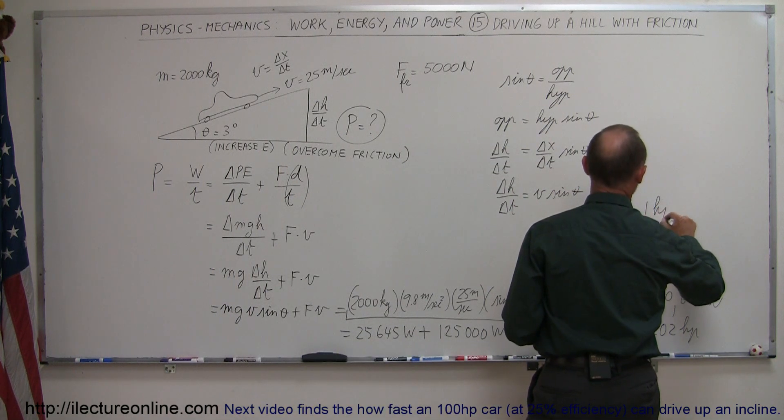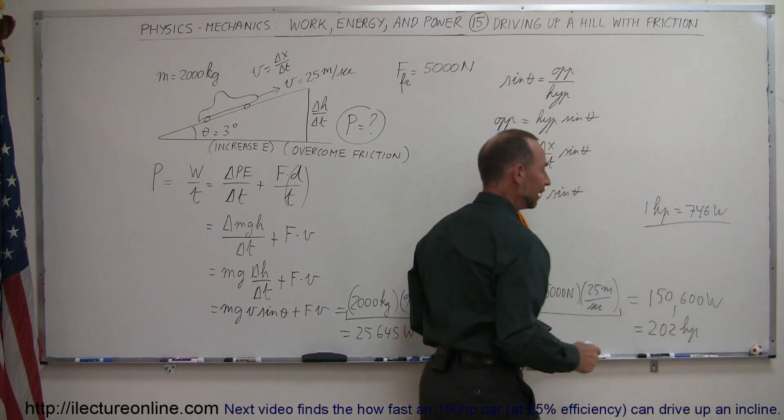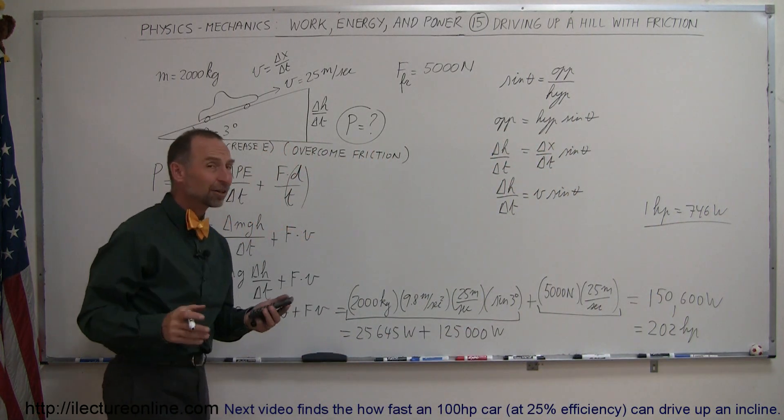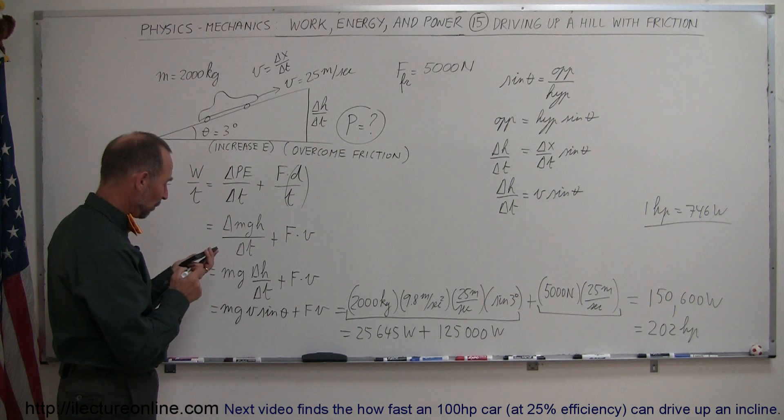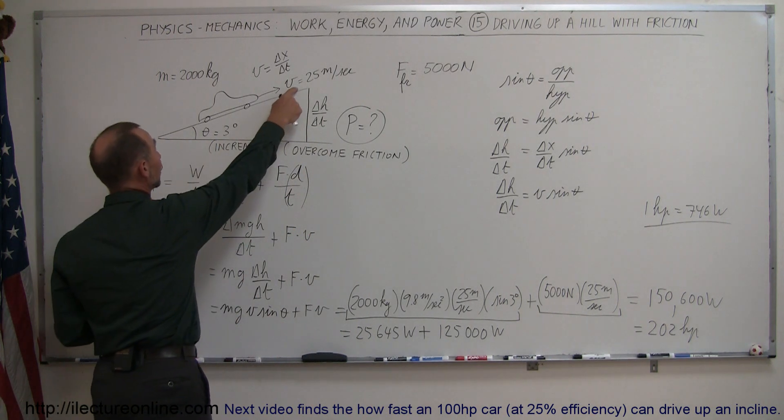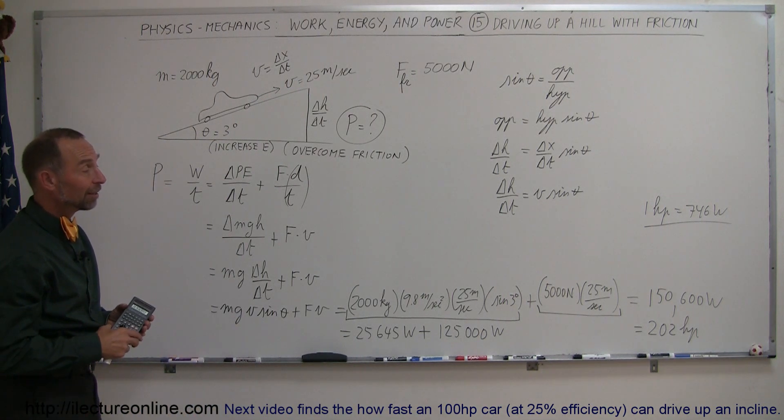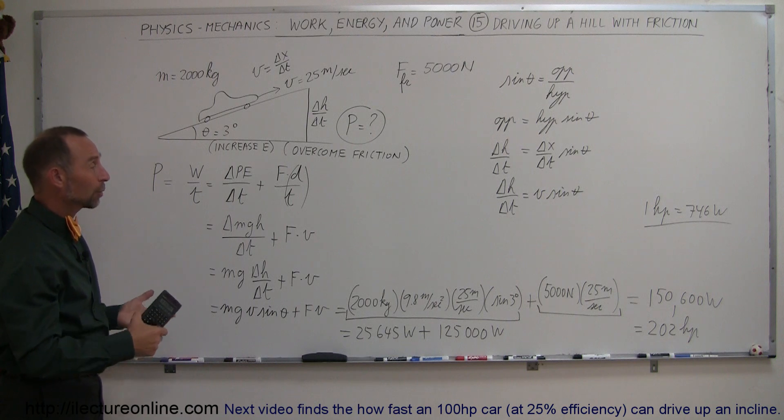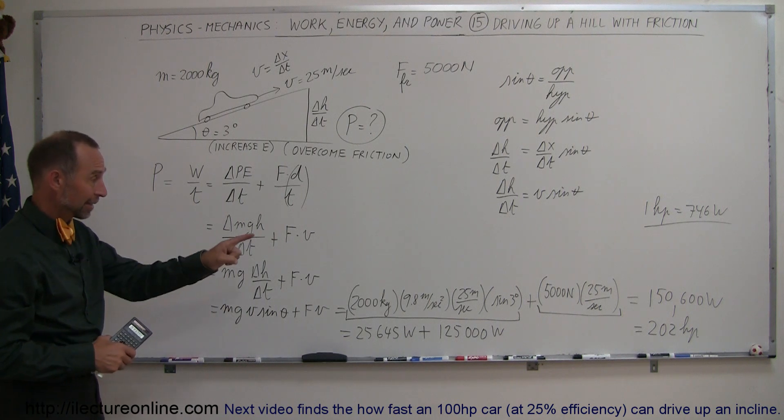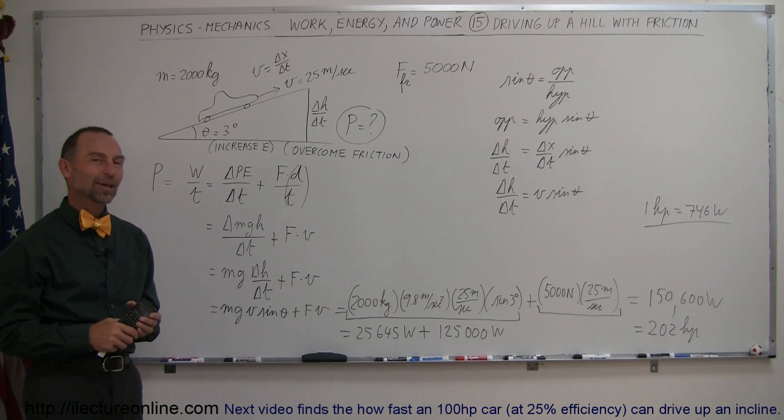Remember that 1 horsepower is equal to 746 watts, so when we use that conversion, 202 horsepower. And not every car has that much horsepower available, and so that means not all cars can go up a hill at 25 meters per second when the hill has an angle of 3 degrees. So that's kind of a practical example of how we find the power required to go up a hill, taking into account the friction or the wind resistance that we have to overcome, and that's how we do that.